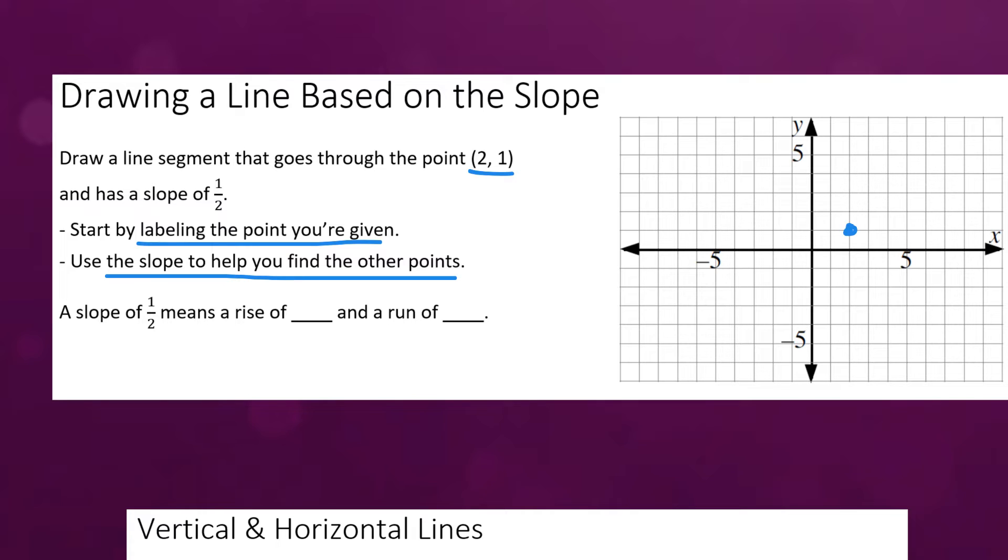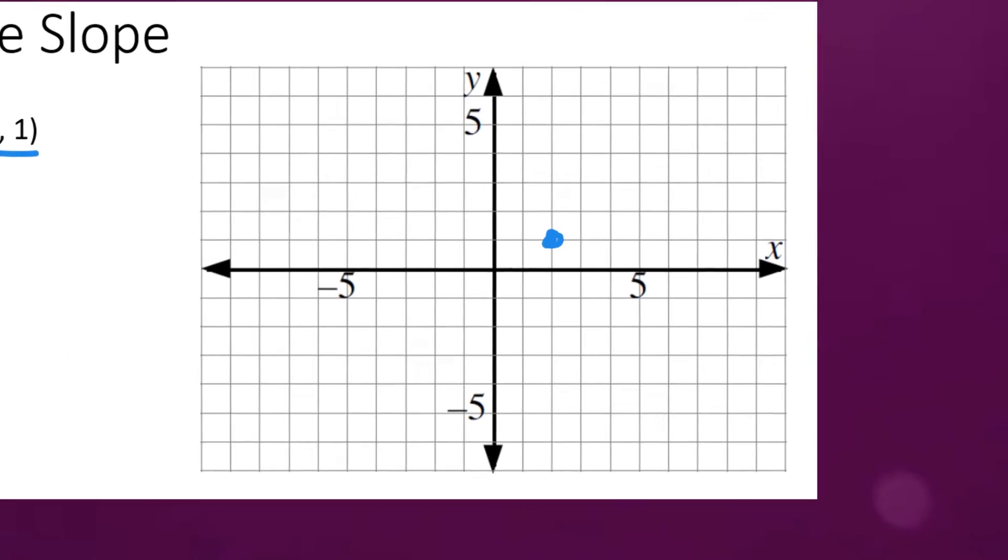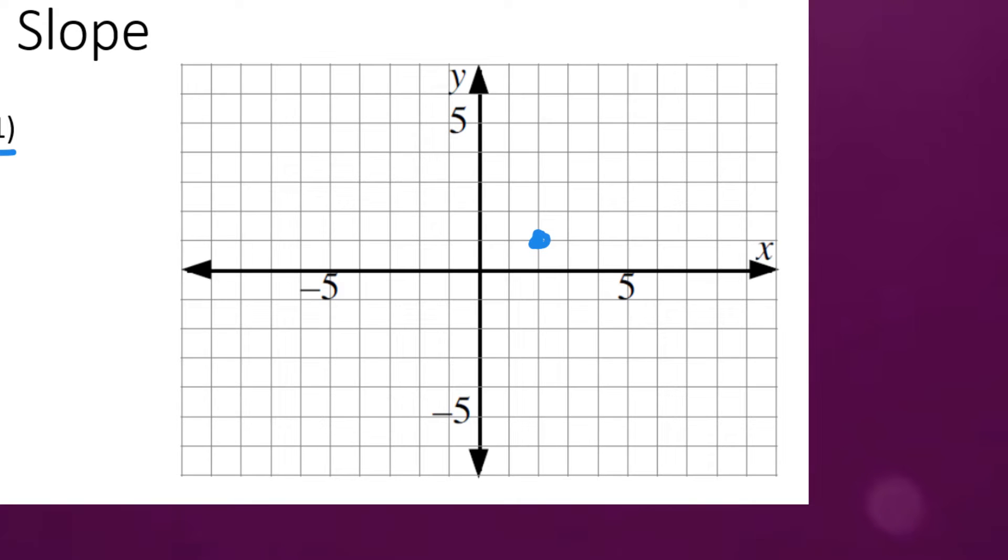Now the next step is to use the slope to help you find the other points. Well a slope of one half means a rise of one and a run of two. And I know that because the formula for slope is rise over run. So in this case the rise is one and the run is two. So how does that help us create this line? Well we already know this point exists on the graph. Now we just have to imagine what happens if we rise one and run two.